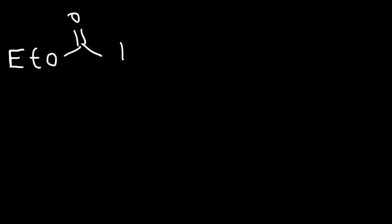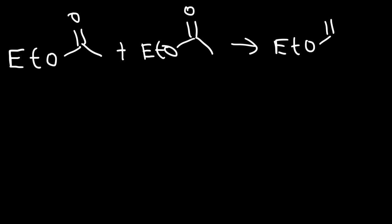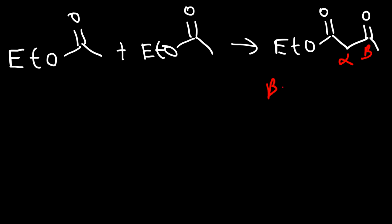In this video we're going to go over the Claisen condensation reaction. In this reaction we're going to react an ester with another ester to produce a beta-keto ester. This is also known as the acetoacetic ester, which is good for the acetoacetic ester synthesis reaction. So you have two esters on the left and you get a beta-keto ester. This is the alpha carbon, this is the beta carbon with respect to the ester, and there's a ketone on the beta carbon, so it's called a beta-keto ester.